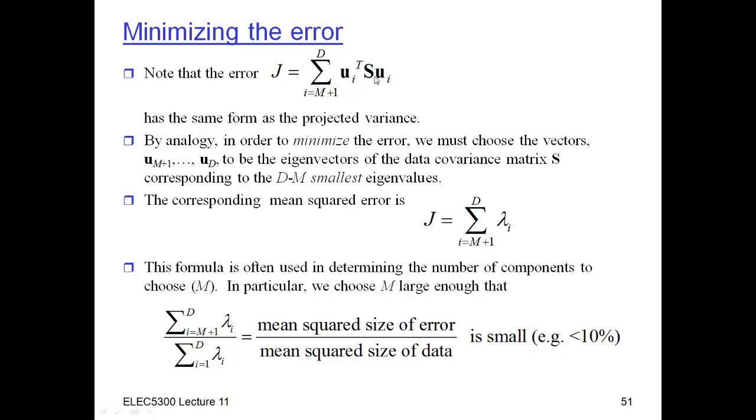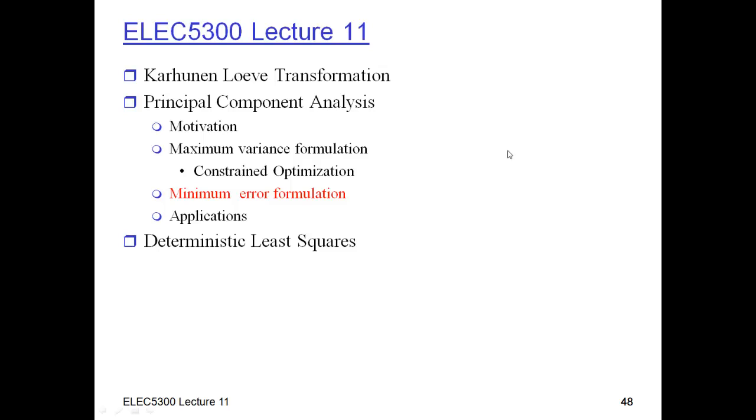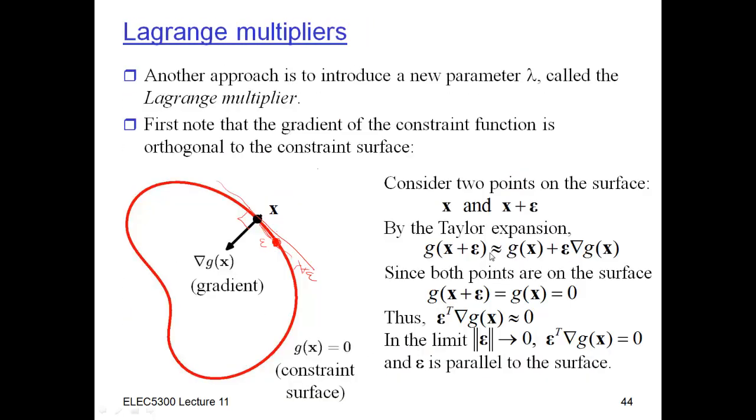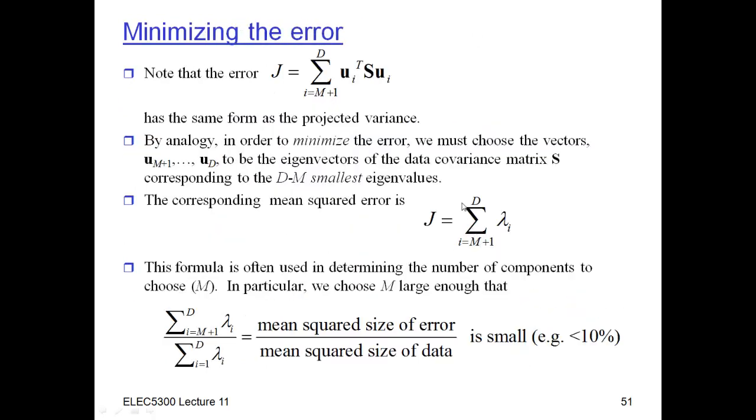Now, if I choose the u to be eigenvectors of S, then according to the same analysis we had in the maximum variance case, the variance here is just the eigenvalue. And so this thing here then, if these are chosen to be eigenvectors, are just the corresponding eigenvalues. And so that's the error. So the sum of all the eigenvalues from M plus 1 all the way up to D gives you a measure of the error, or the average squared error.